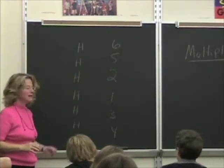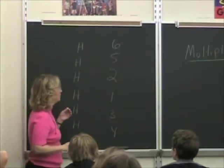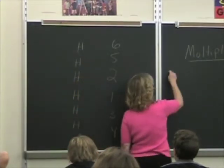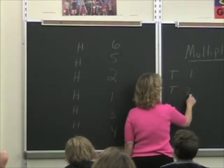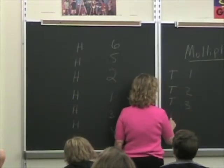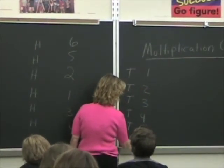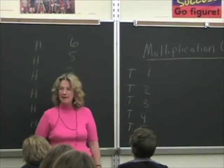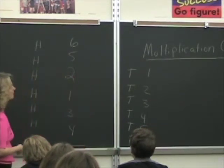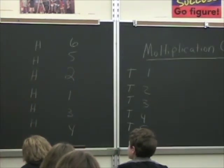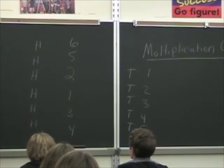And then you could have had a tail and a one, tail and a two, and a tail and a three, a tail and a four, a tail and a five, a tail and a six. Is that everything that could have happened? Move your head. So how many things is that? Twelve. Twelve.